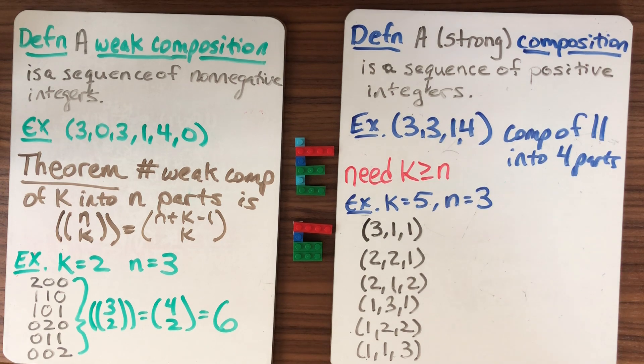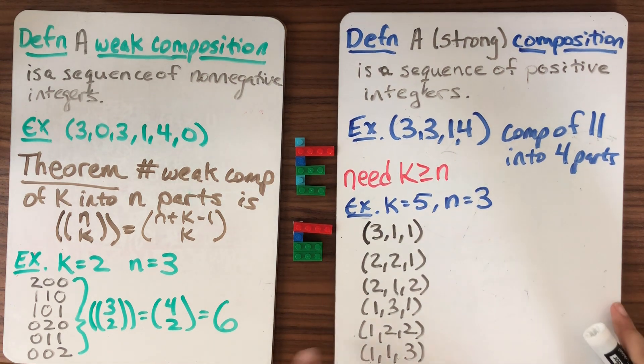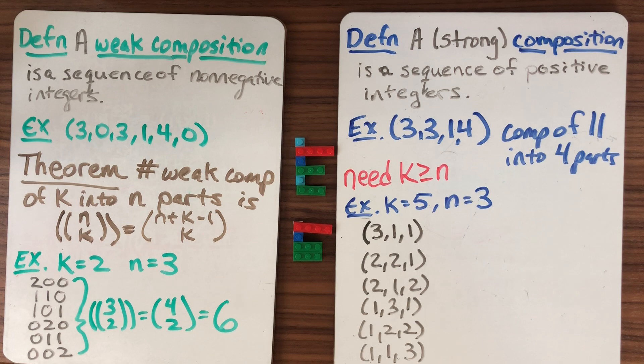So there's six. Is it the same six that we found over here? That's one thing we can ask ourselves. And the answer is yes, but how do we see that? And how do we use that to come up with a theorem for the number of strong compositions?